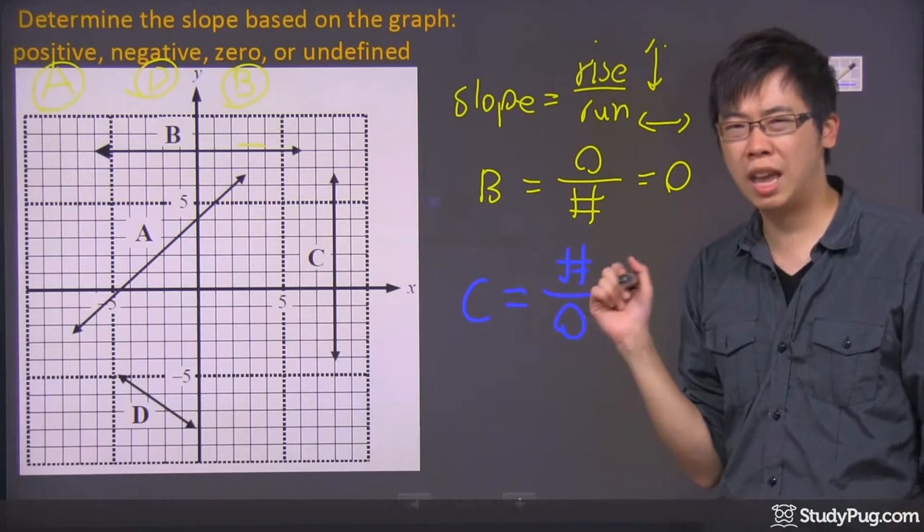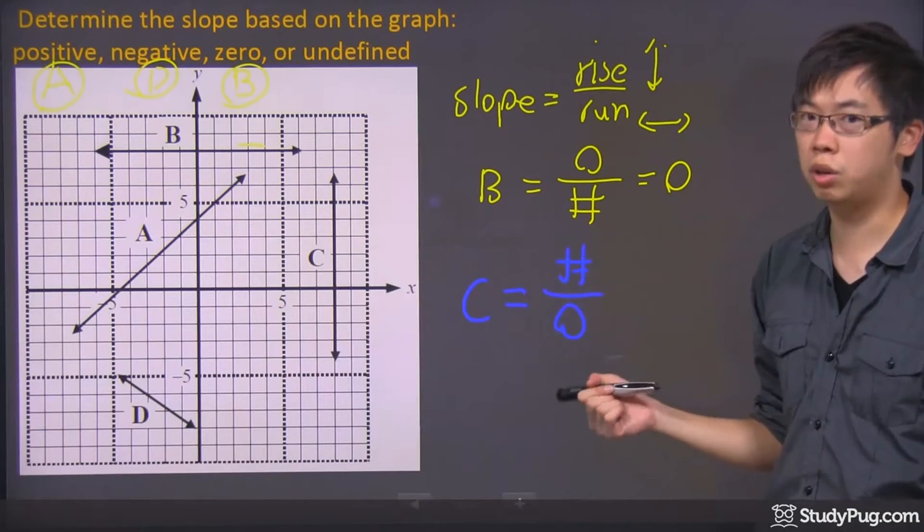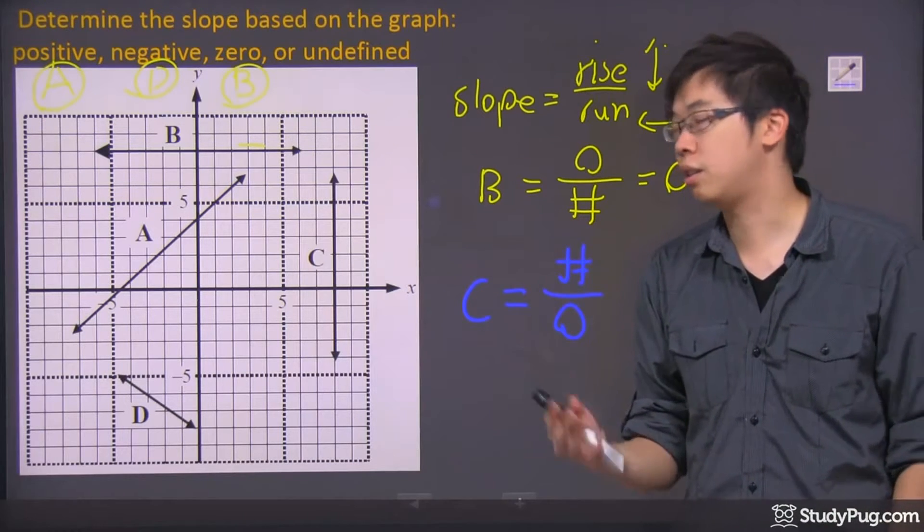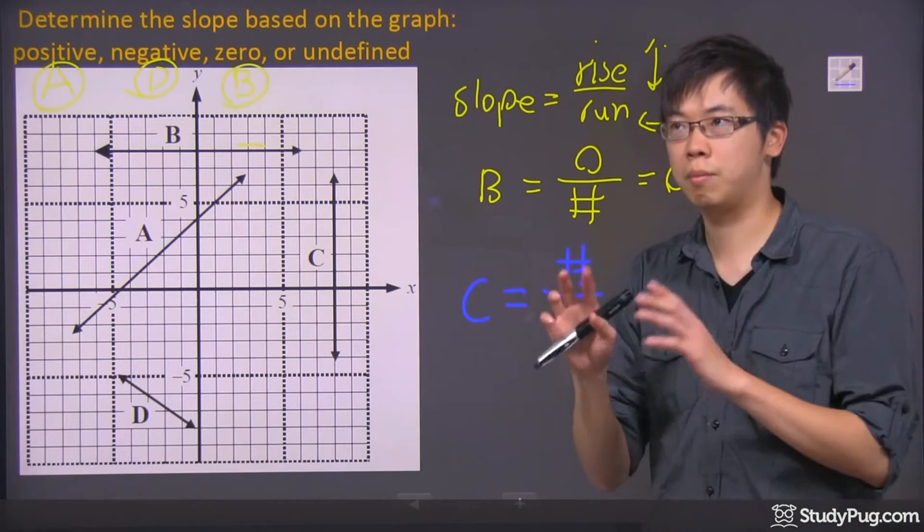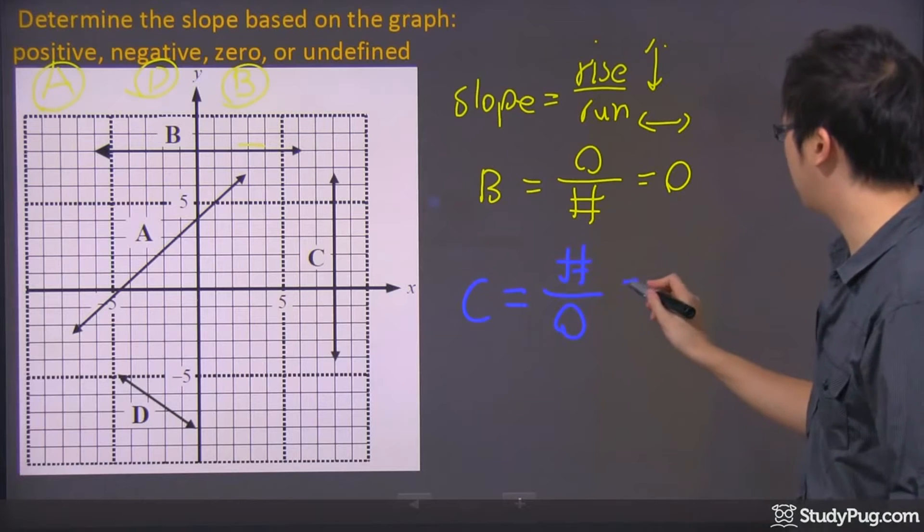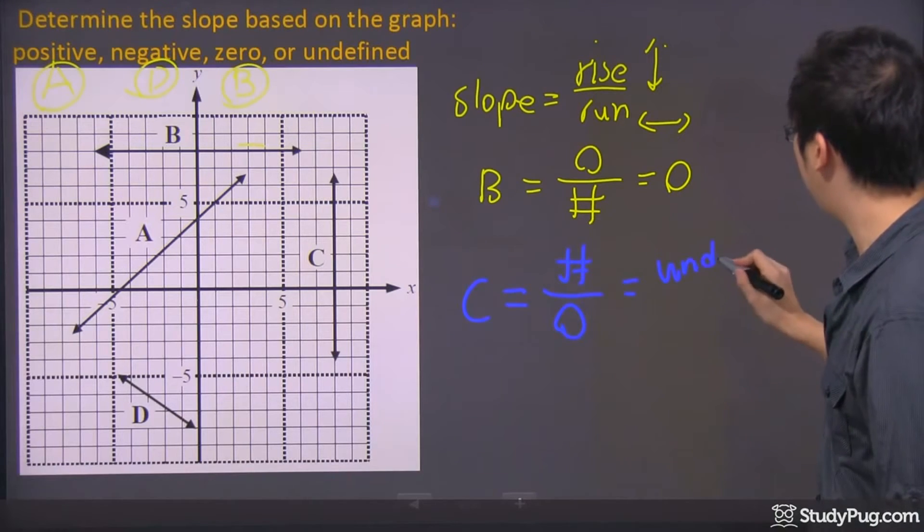Now, try to punch in any number over a zero. What do you get on the calculator? It says undefined. So that's why, or math error. So that's why this one here is the undefined.